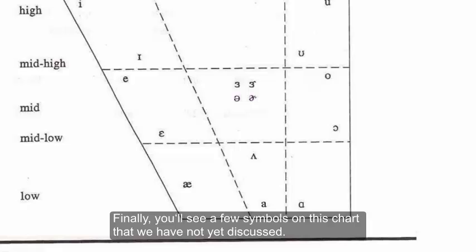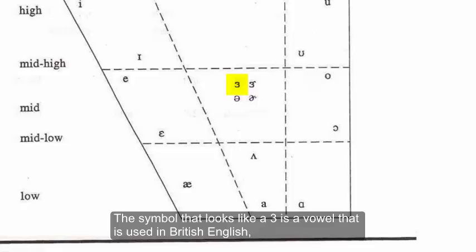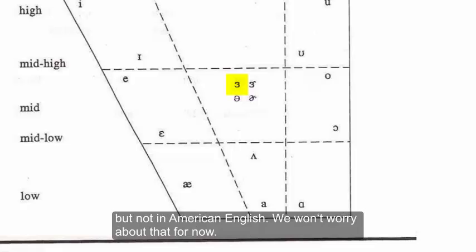Finally, you'll see a few symbols on this chart that we haven't discussed yet. The symbol that looks like a three is a vowel that's used in British English, but not in American English. We won't worry about that for now.